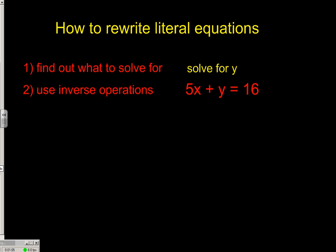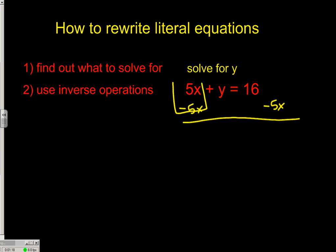In this one we've got 5x plus y, so all we have to do is get the 5x away from the y and we'll be free. We want to solve for y, so this will knock everything off beside it — pull down our y. 16 minus 5x, since they're not like terms, and we're done.